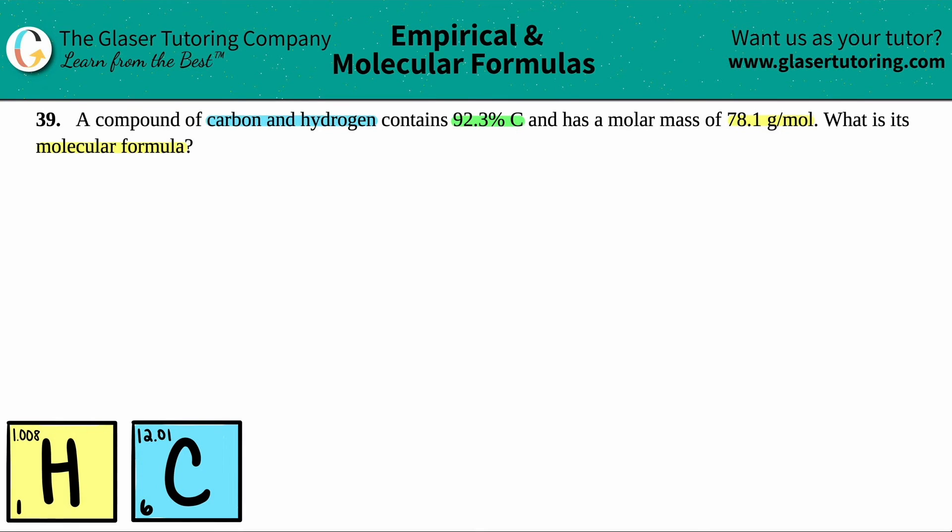Now, if they give you a molar mass, in this case they told us the molar mass was 78.1 grams per mole. This molar, M-O-L, M-O-L in molecular, this is the molecular formula mass. So just make that connection. Molar mass goes with molecular formula. But now how do we find this? Well, we need to go to empirical formula.